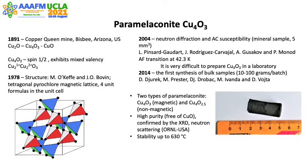In 2004, the French group reported from the mineral sample the neutron scattering and AC susceptibility data, the latter revealing an antiferromagnetic transition at 42.3 K. In 2014, the Croatian group reported the first bulk preparation of paramelaconite, 10 to 100 grams per batch.